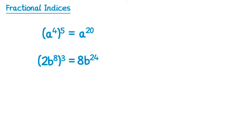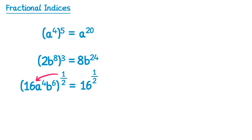This bracket law can be applied to fractional indices as well. For example, we first raise 16 to the power 1 half: the square root of 16 is 4. We then multiply the indices: 4 times 1 half is 2, so we have a to the power 2; and 6 times 1 half is 3, so we have b to the power 3. And that's the question done.